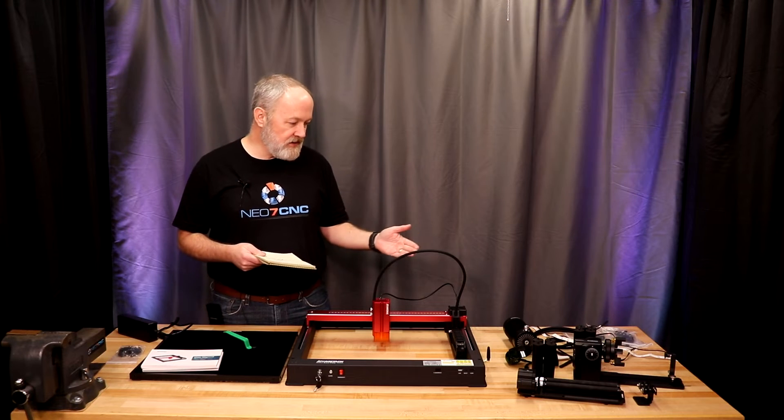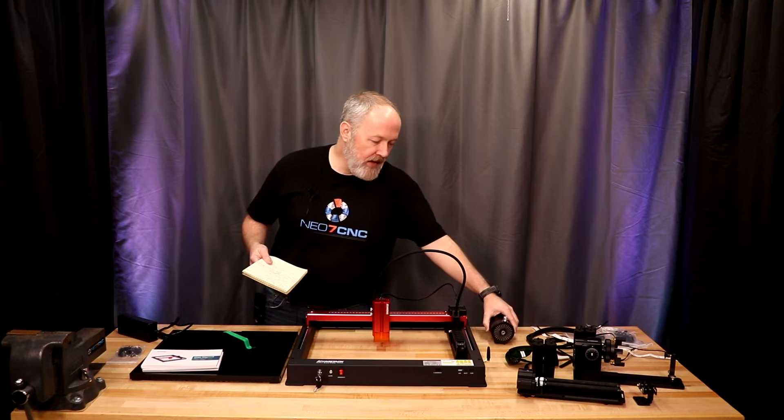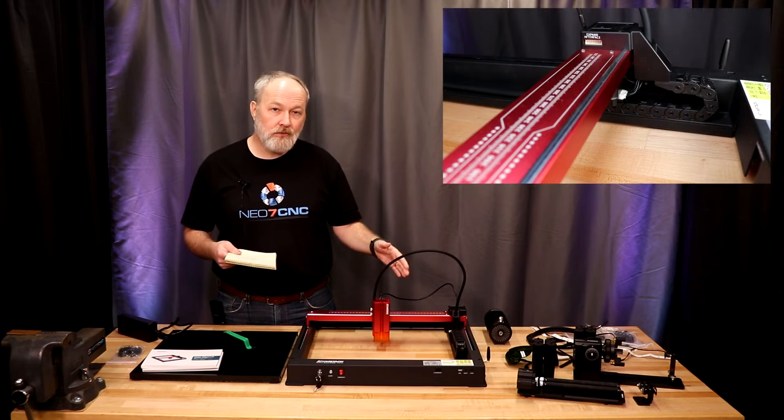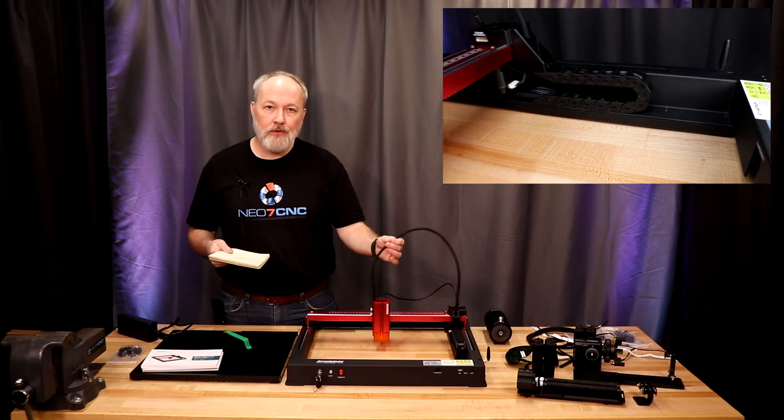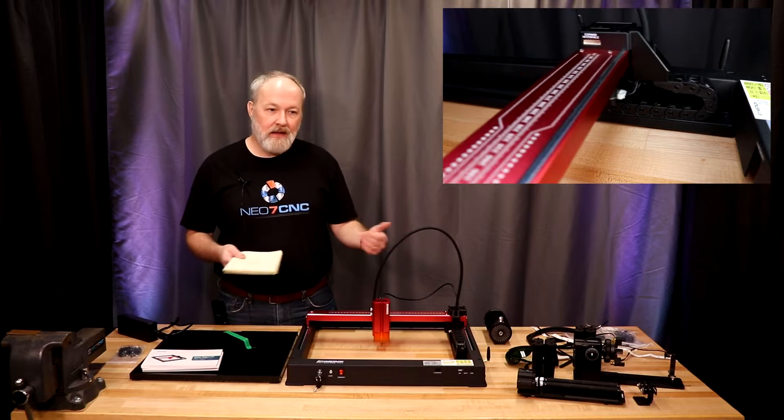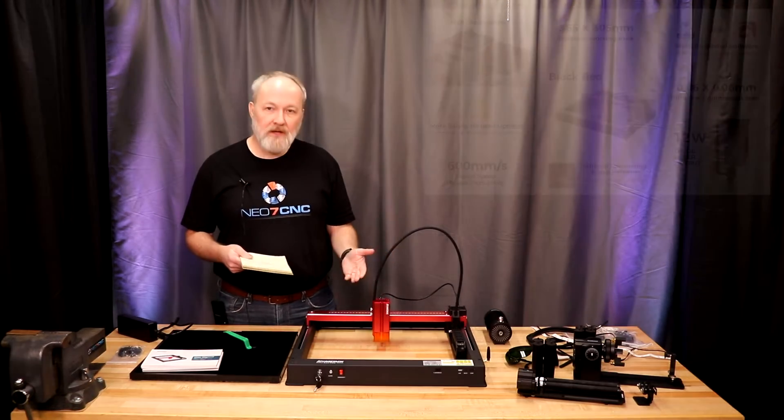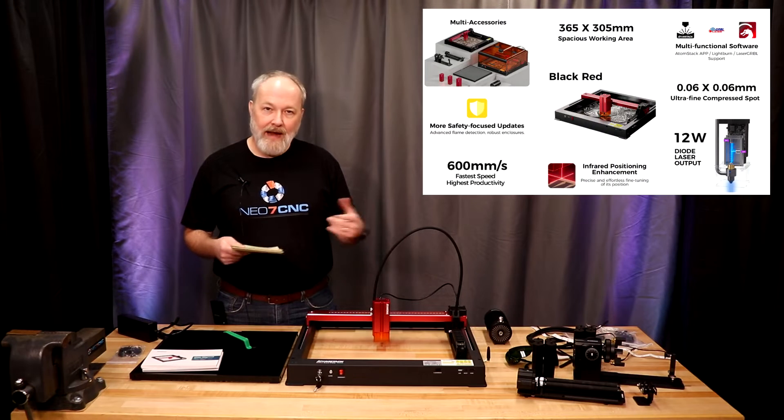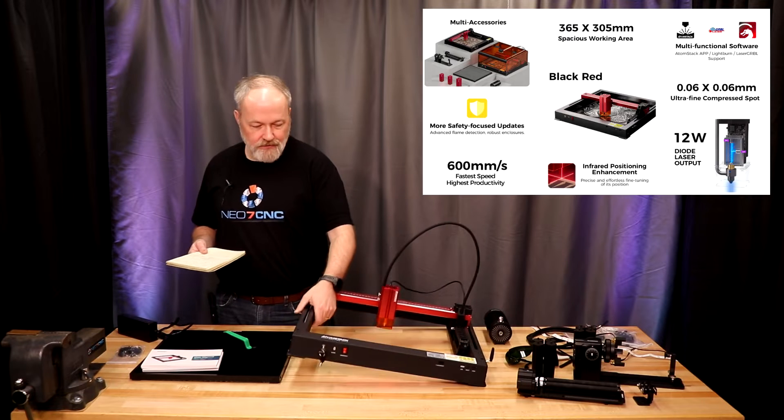This has an air assist with the F30 air pump. The cable that runs through the cable chain also routes the silicon hose for the air, making it even that much cleaner of an execution. The speed on this is very good at 600 millimeters a second advertised max speed. This has flame detection and tilt detection.